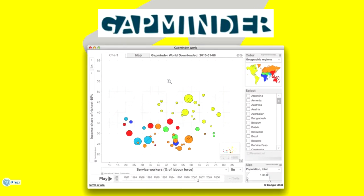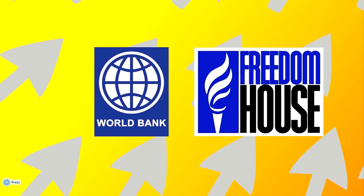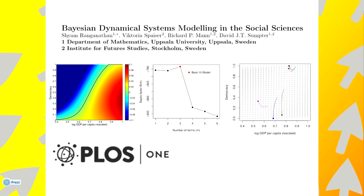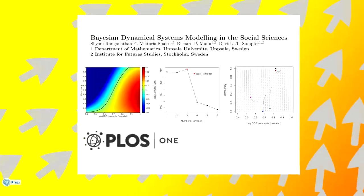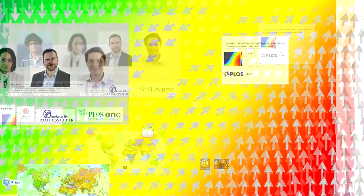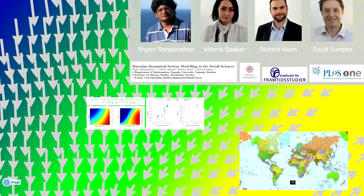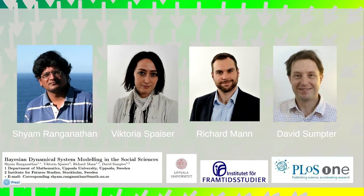Gapminder allows you to visualise different countries. Year-by-year data is available from the World Bank and other sources. Our own contribution, published in PLOS One, allows you to take this data and produce the images I've shown here. With basic programming knowledge, you can start today with our online R package. So close your news browser, and find out how the world is really changing.